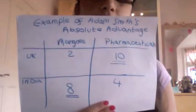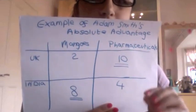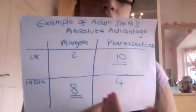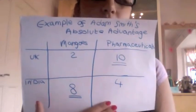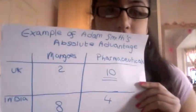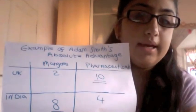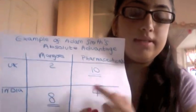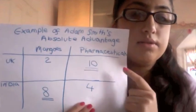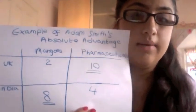For India, 100% of its resources — land, labour, capital, enterprise — are also split: 50% go to pharmaceuticals and they produce 4, and 50% go to mangoes and they produce 8. Before any international trade, the world output for mangoes would be 2 plus 8 equals 10, and the world output for pharmaceuticals would be 10 plus 4 equals 14.